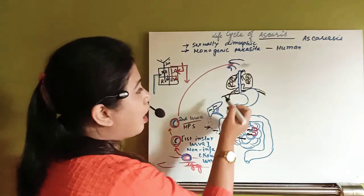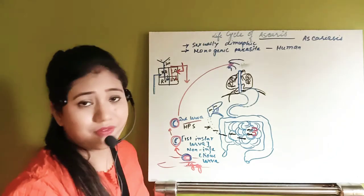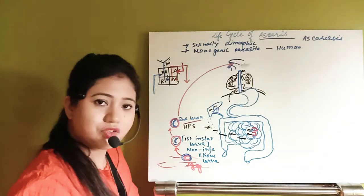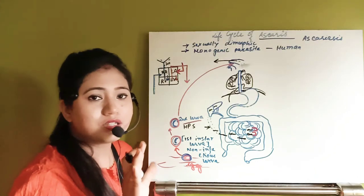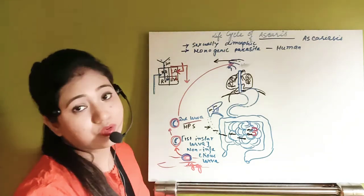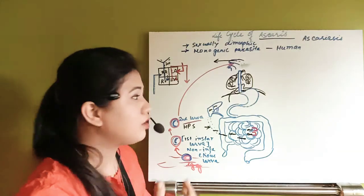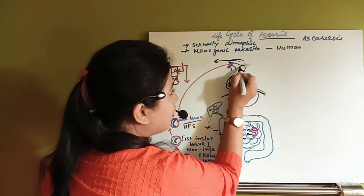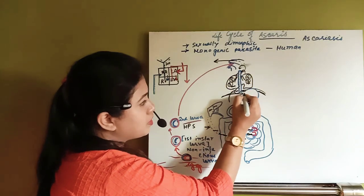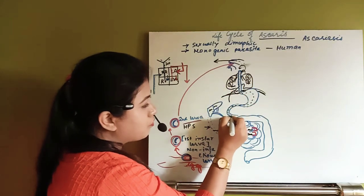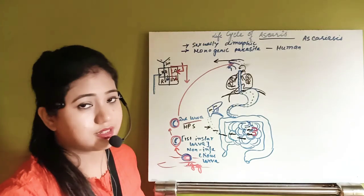The fourth instar larva exits the lungs, reaches the trachea, then travels up to the larynx and pharynx. From the pharynx, it is possible for it to come out, which would benefit the individual. However, because we continually swallow, the fourth instar larva is swallowed back into the esophagus, goes to the stomach, then the duodenum, and reaches the jejunum and ileum of the small intestine once again.